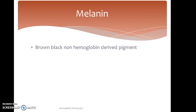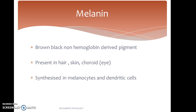What is melanin? It is a brown-black, non-hemoglobin-derived pigment present in hair, skin, and choroid of the eye, synthesized in melanocytes and dendritic cells.